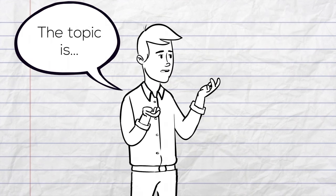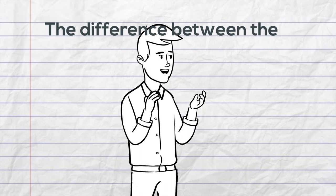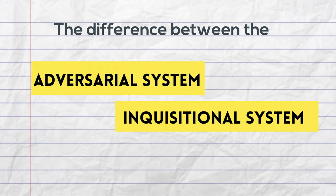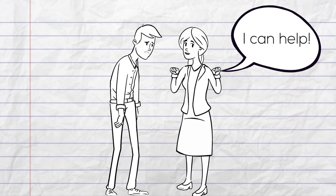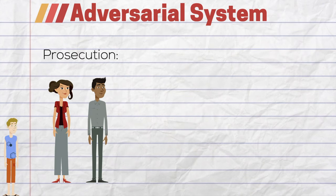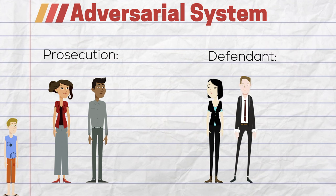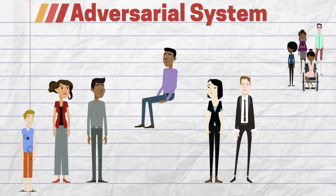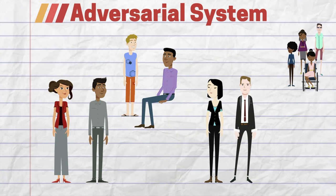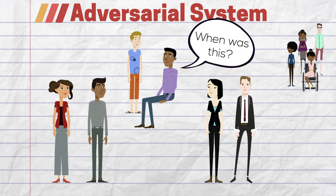The topic is to explain what the adversarial system and the inquisitional systems are. In the adversarial system, the prosecution proves the defendant guilty in front of a neutral judge and jury. Witnesses are called to testify and a judge can ask questions, not investigate.